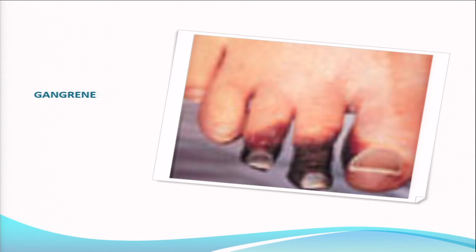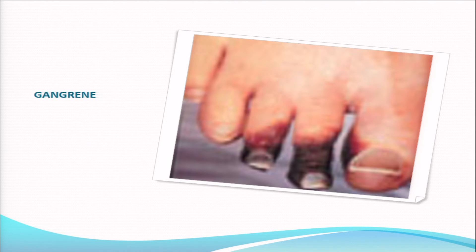Gangrene is not commonly seen but does occur. I had a patient admitted last week with gangrene - self-amputation was the only choice, but surgery was avoided due to comorbidities. Long-standing conditions include dermopathy, bullae, pseudo-acanthosis, and scleredema diabeticorum of Buschke.